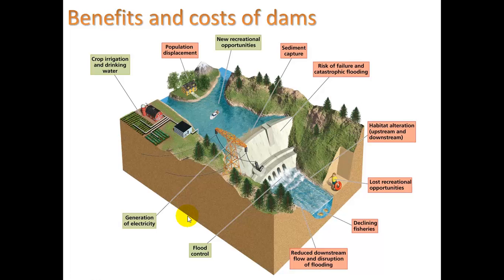The benefits and costs of dams are an extensive list. People get displaced when you build a dam because you are flooding where they used to live. You capture sediment, which over time backs up and up — sediment that should have gone to the ocean to replenish shorelines. You physically have to dredge out the sediment with big bulldozers. The dam could also break, which would be catastrophic. And you have reduced downstream flow and disruption of the natural flooding cycle, which affects fish.